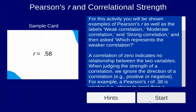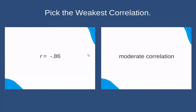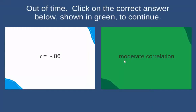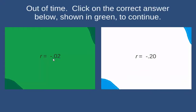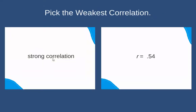I'll give you a quick walkthrough of these different activities so that you can see how to play the games. In this case, you have two cards and you're picking whichever one is the weakest correlation. Whichever one is closest to zero is the weakest correlation — a correlation of zero means no relationship at all.